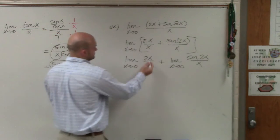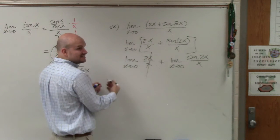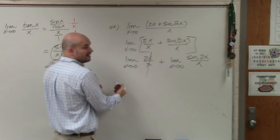Well, here, 2x over x equals 2. And the limit of a constant is just equal to the constant.